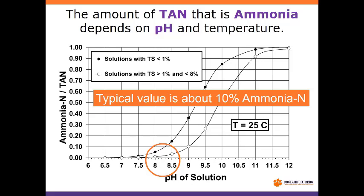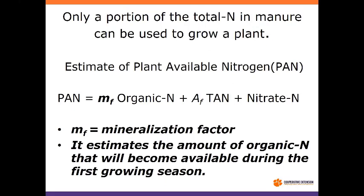At pH 6.5, there's essentially no ammonia. With alum treatment of litter, our goal is to get to pH 7. Most of our lagoon waters are around the 7–8 range, and slurries around a similar range. So I put an orange circle there — it'll range from about 0.6 to 10% — and we'll use 10% as a typical value, assuming the high side. When we estimate plant available nitrogen, or PAN, it's basically how much of the organic N can I count the first year, how much of the ammonium N can I count, and if I measure nitrate, I count it all.